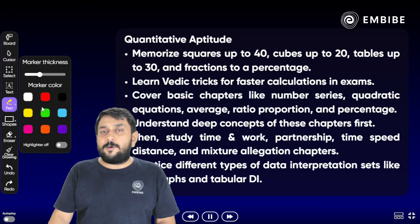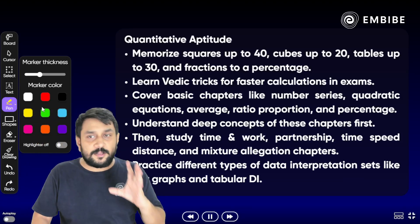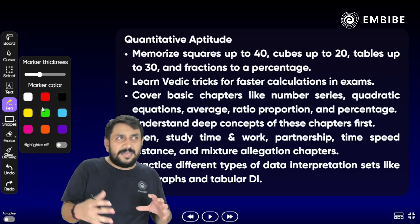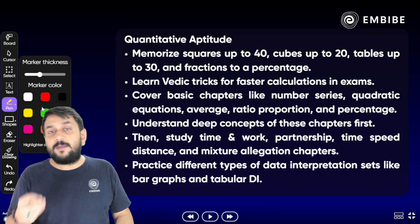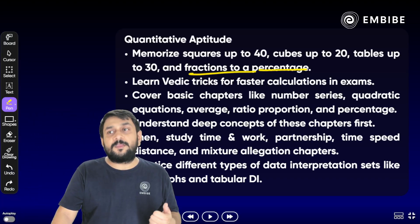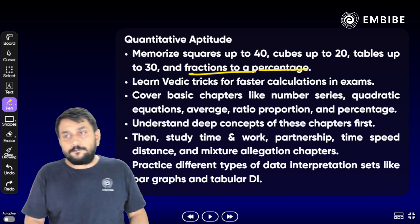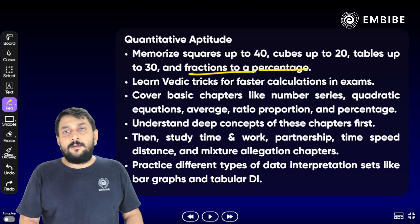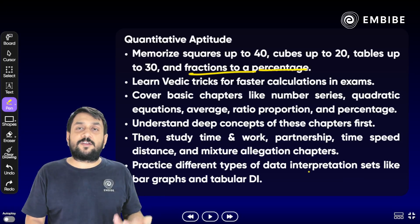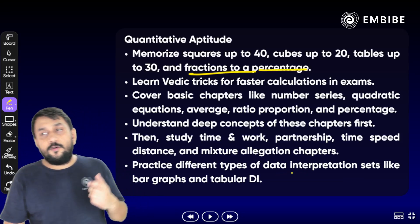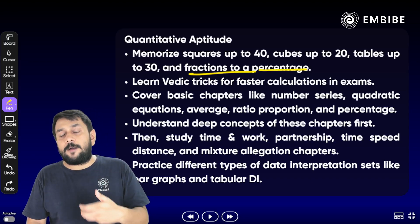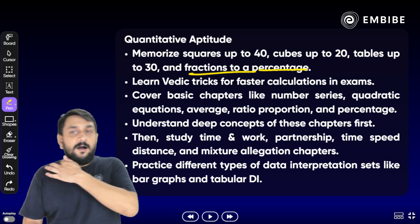Quant की बात करें तो Squares कम से कम 40, maximum 60 तक याद होने चाहिए। Cubes minimum 20, maximum 30 तक। Tables minimum 30, ideally 35 तक। Percentage to Fraction values याद होनी चाहिए — जैसे 16⅔% = 1/6, 37.5% = 3/8, 50% = 1/2, 66⅔% = 2/3, 4.16% = 1/24 — ये याद होने पर चीज़ें आसान हो जाती हैं।